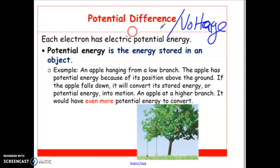Before we can get into that, you have to think about what potential energy means. Potential energy is energy that is stored within an object. Think of the term potential — maybe you've been told, hey, you have a lot of potential. It means something that has not yet happened, but has the ability to do it. So potential energy means exactly the same thing: it's energy that is stored but has not yet been used.